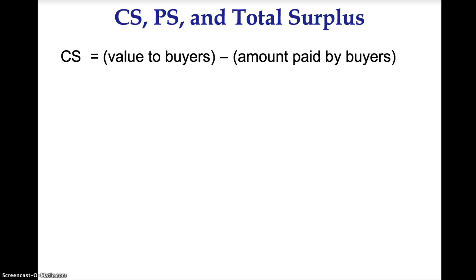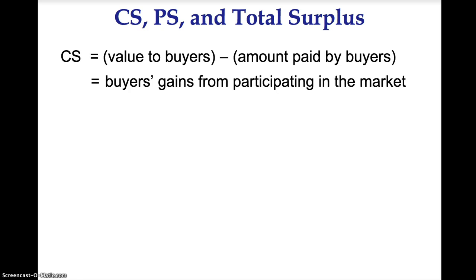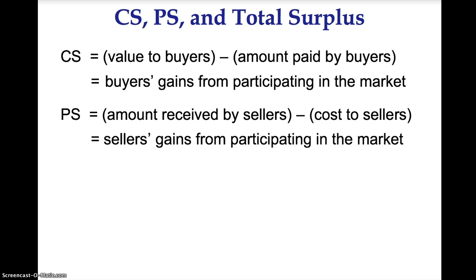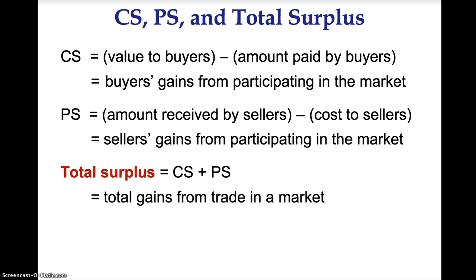Consumer surplus equals the value to buyers minus the amount paid by buyers — in other words, it is the buyer's gain from participating in the market. Producer surplus is the amount received by sellers minus the cost to sellers — in other words, it is the seller's gain from participating in the market. Total surplus is the sum of consumer and producer surplus. It is the total gains from trade in the market — the value to buyers minus the cost to sellers.